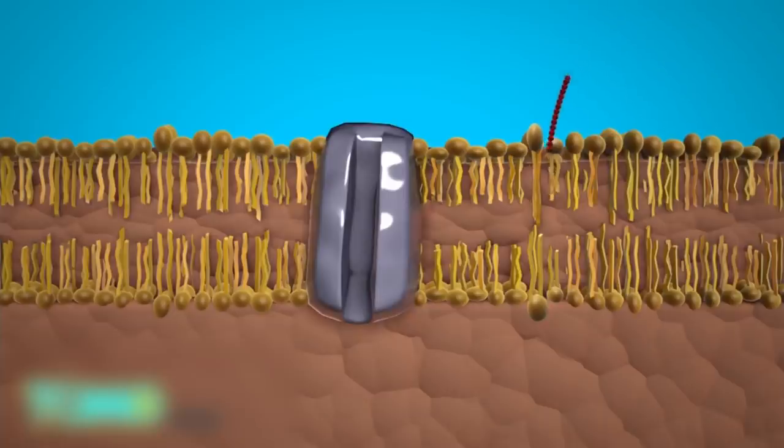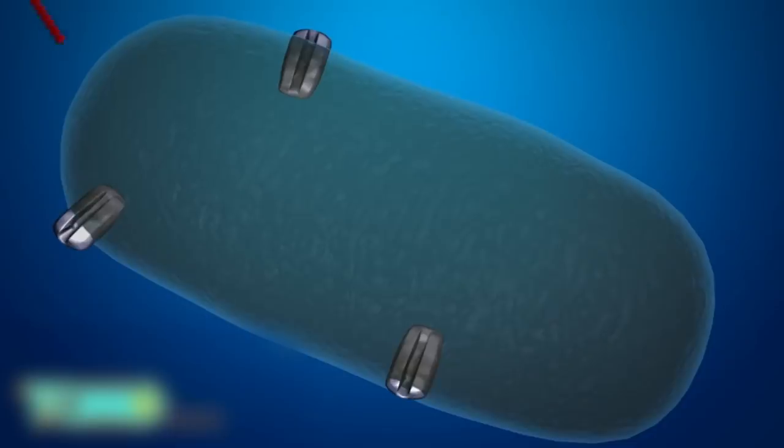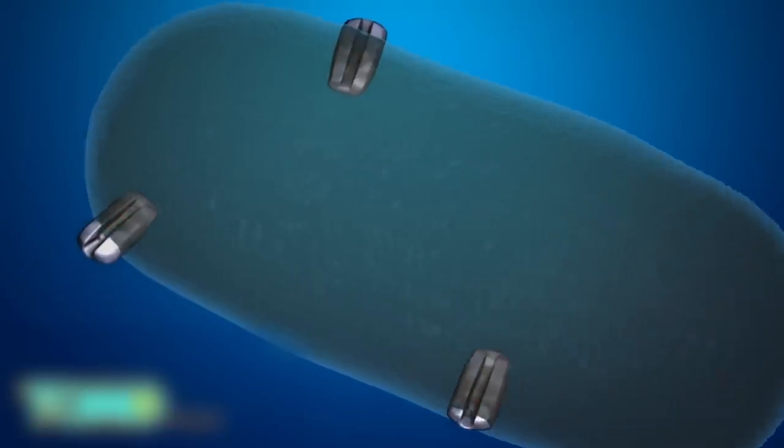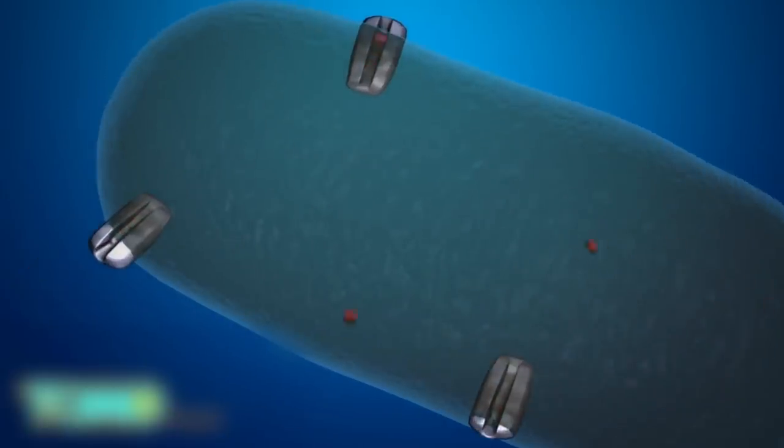However, bacteria over time can mutate to protect themselves, commonly through developing an efflux pump, which expels antimicrobial polymers. Researchers at UT Southwestern Medical Center in Texas have discovered a synthetic compound that blocks efflux pumps, making superbugs once again vulnerable.